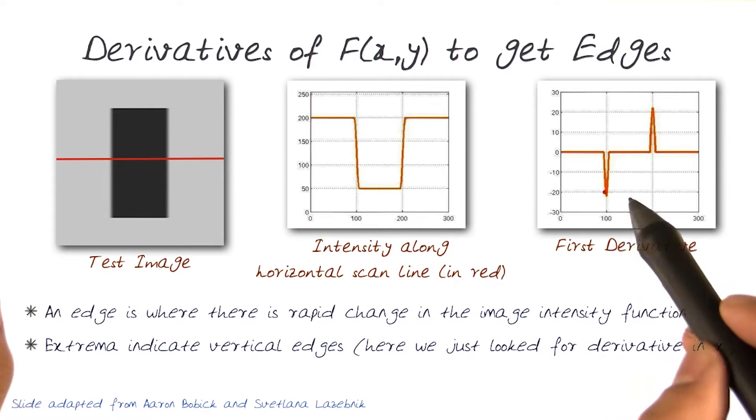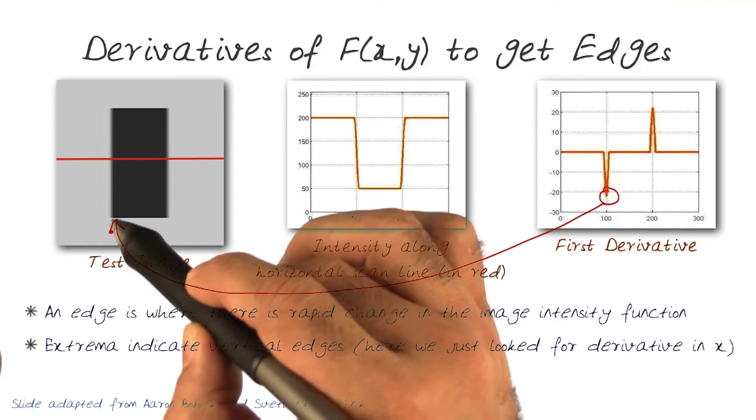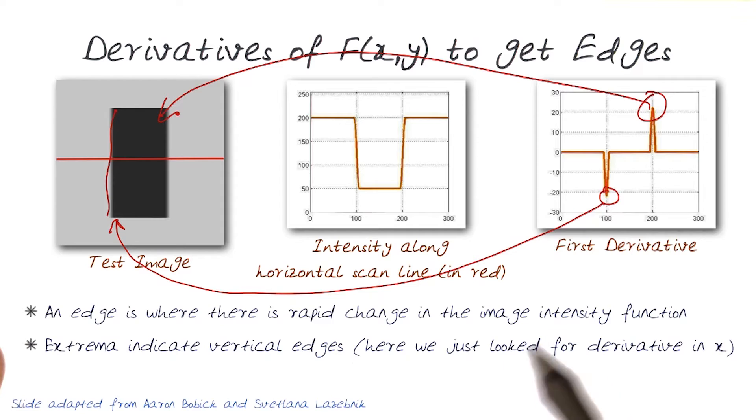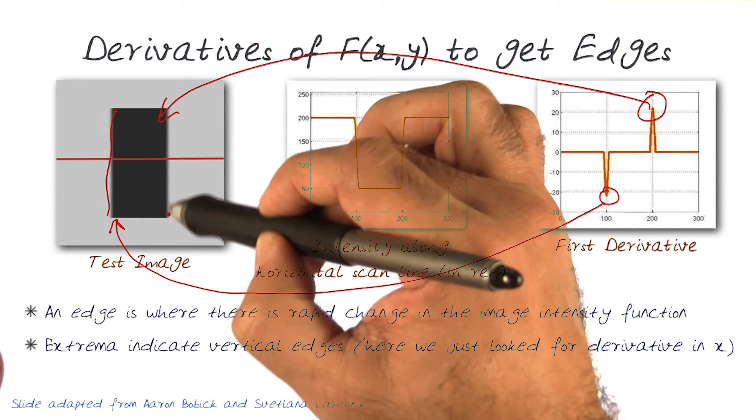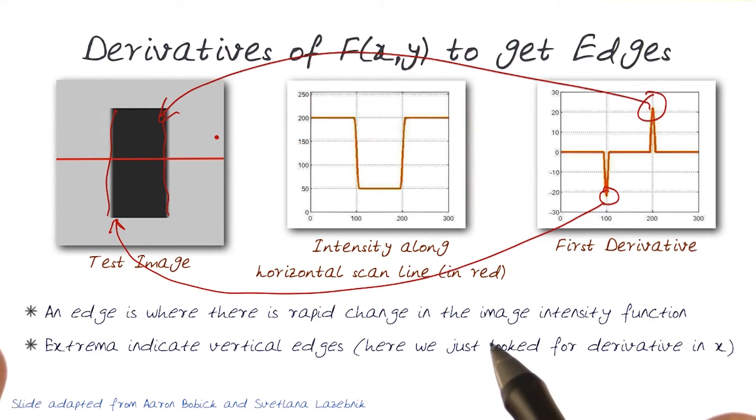So if you notice now, these extrema points refer to this edge, and this extrema point refers to this edge. We'll only look for derivatives in x, and these are the two edges. But there's a rapid change as I traverse this way on the image.